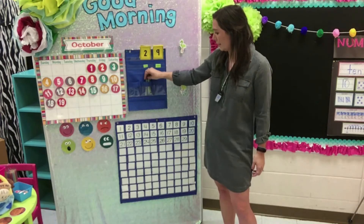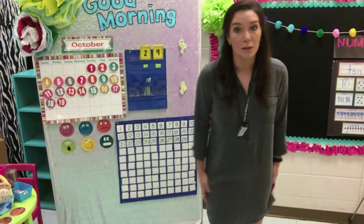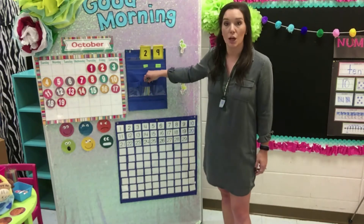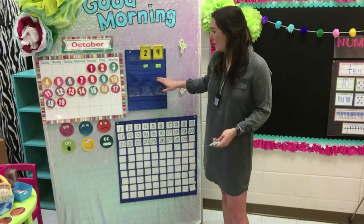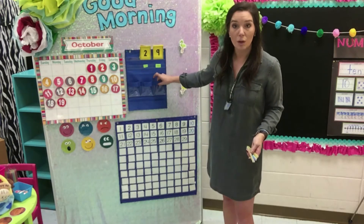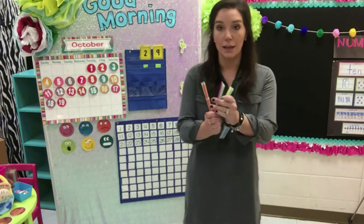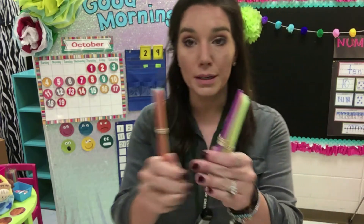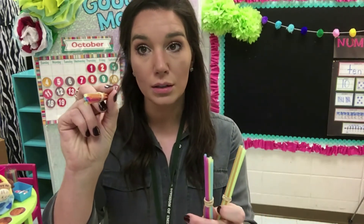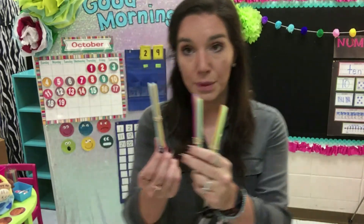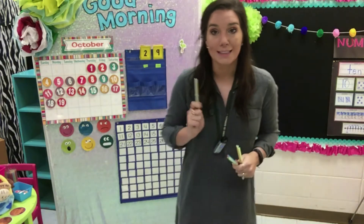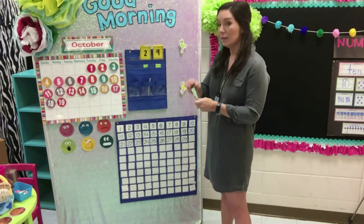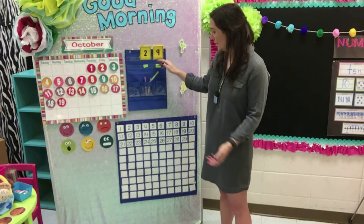Now let's figure out how many days we've been in school. We're going to count all of the straws we have because those represent how many days we've been in school. I'm pulling out my tens and my ones column. I don't have anything in ones, but I have some in tens. Here are my tens — I don't count them by ones anymore because they're not just one straw, they're ten straws put together. So I'm going to count them by tens: ten, twenty, thirty.